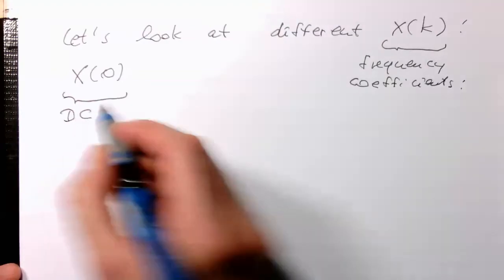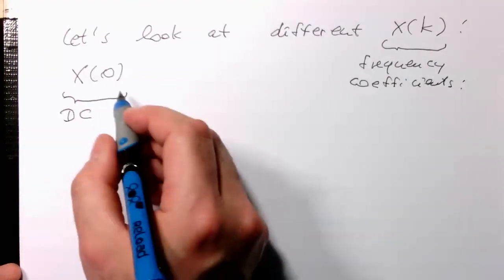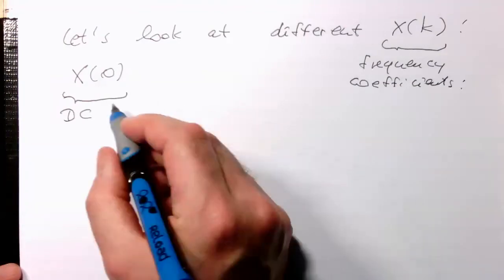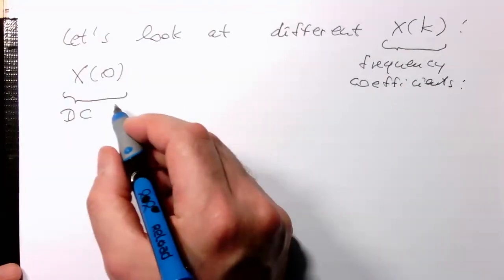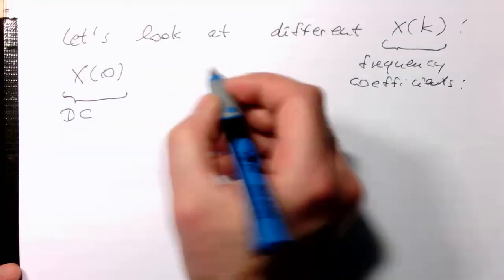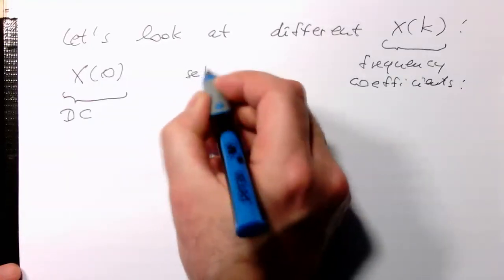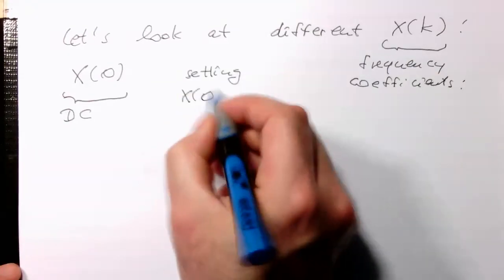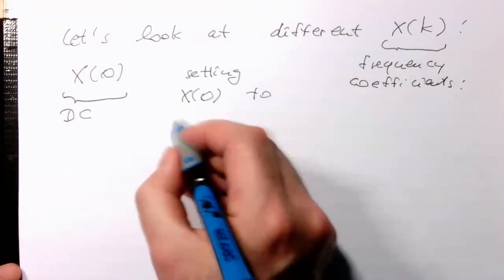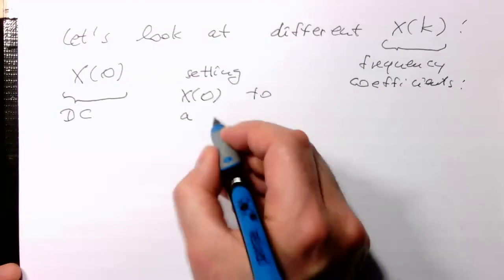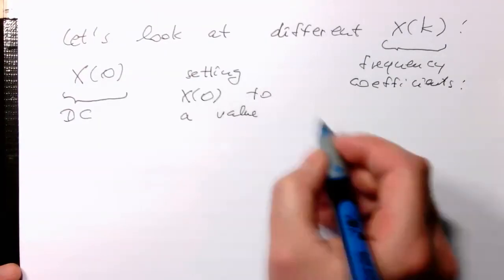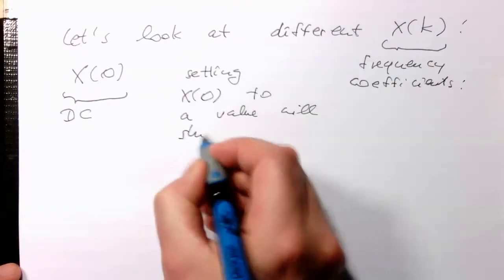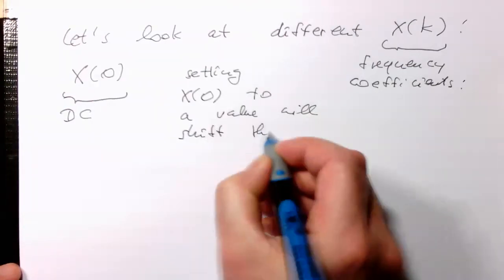So anything when we're setting x of 0 to something, then our x of n will be shifted by this value here. So if we have to a value, it will shift the whole time series.